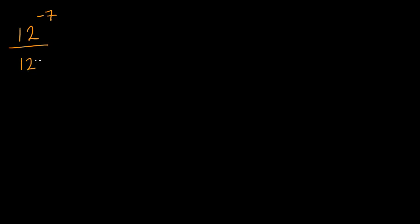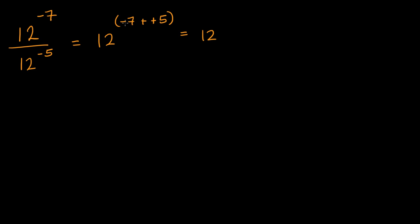Now let's do it with some quotients. What is 12 to the negative seven divided by 12 to the negative five power? Well, when you're dividing, you subtract exponents if you have the same base. So this is going to be equal to 12 to the negative seven minus negative five power — you're subtracting the bottom exponent. And so this is going to be equal to 12 to the negative two power, since subtracting a negative is the same thing as adding the positive.